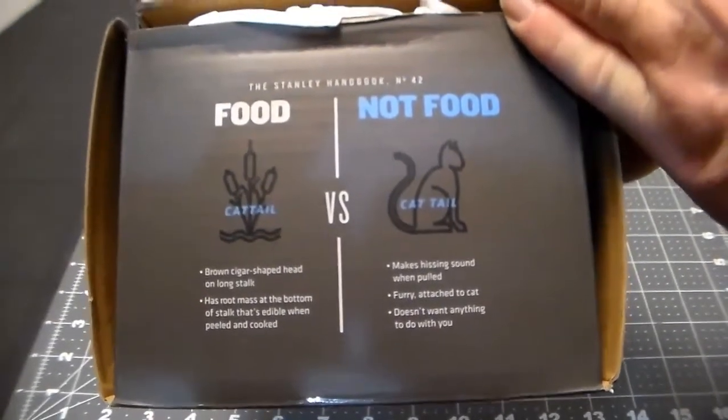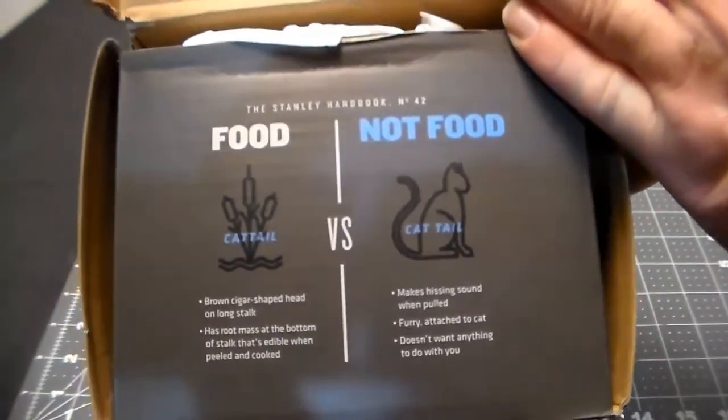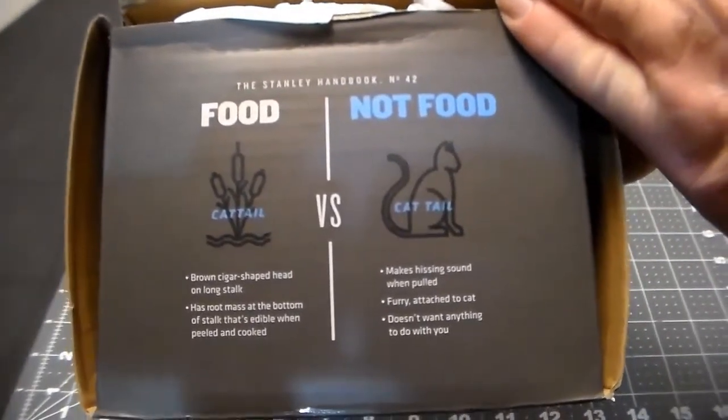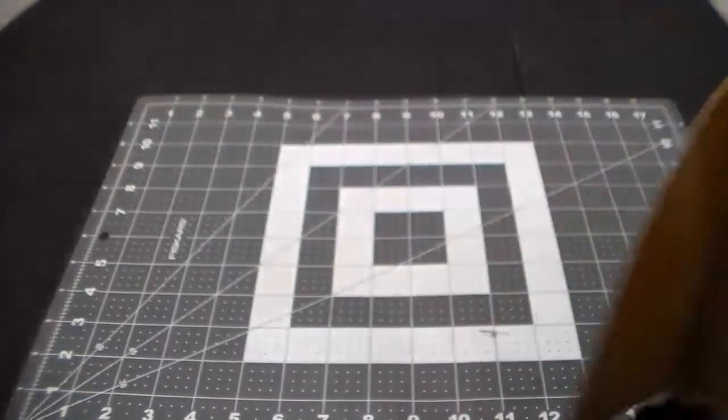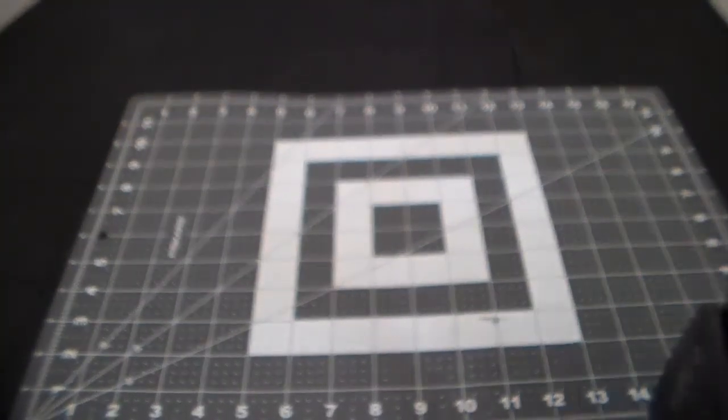The Stanley Handbook number 42, Cattail vs. Cattail. That's kind of funny, at least somebody has a sense of humor at Stanley.